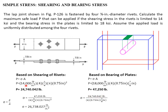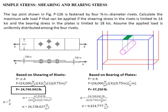Based on bearing of plates, we apply the allowable load from shearing of rivets: stress = 24,740 divided by the area (4 × 0.75 × 7/8). The stress is 9,424.77 psi, which is lower than the allowable bearing stress of 18 KSI. So the safe value is the lower one, as we proved in the calculations. The answer is 24,740.052 pounds.